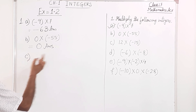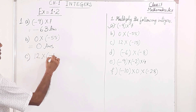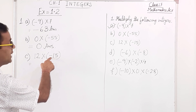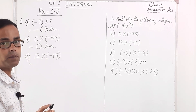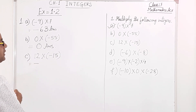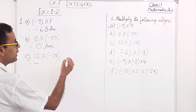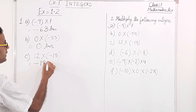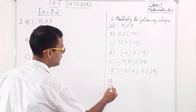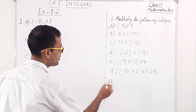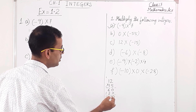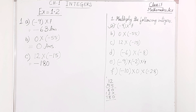Number c: 12 into minus 15. 12 has no sign, which means positive, and minus 15 is negative — different sign. Different sign means the product is negative. We multiply 12 and 15: 12 into 15 equals 180. So the answer is minus 180.